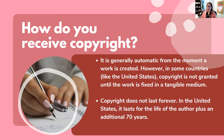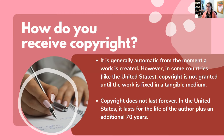Copyright is generally automatic from the moment a work is created. In the United States, it's not granted until the work is in a tangible medium — until it's fixed. It doesn't last forever; in the United States it lasts for the life of the author plus an additional 70 years. Interestingly, Canada recently changed their laws to match the United States — it had been 50 years, and now they've added an extra 20.